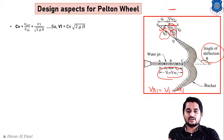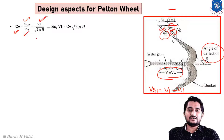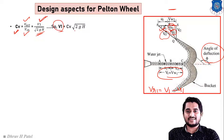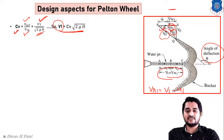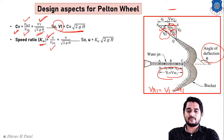Now let us look at the design aspects of the Pelton wheel. First, the coefficient of velocity Cv equals the ratio of actual velocity to theoretical velocity: v1 divided by under root 2gH. So v1 equals Cv times root(2gH). Second, the speed ratio Ku equals blade velocity u divided by root(2gH), so u equals Ku times root(2gH).